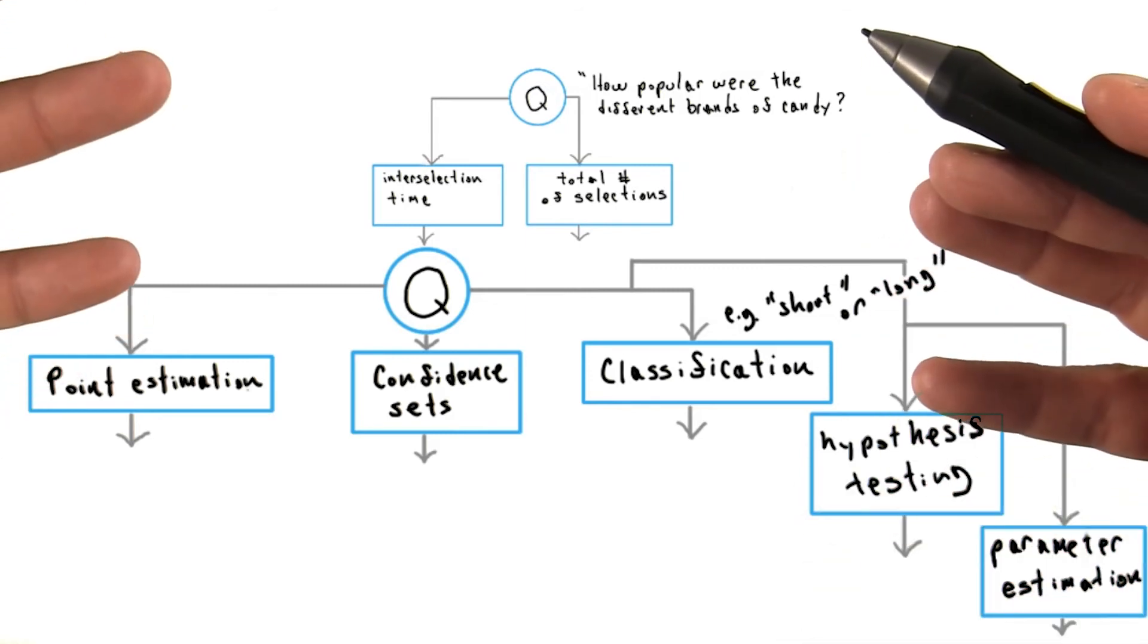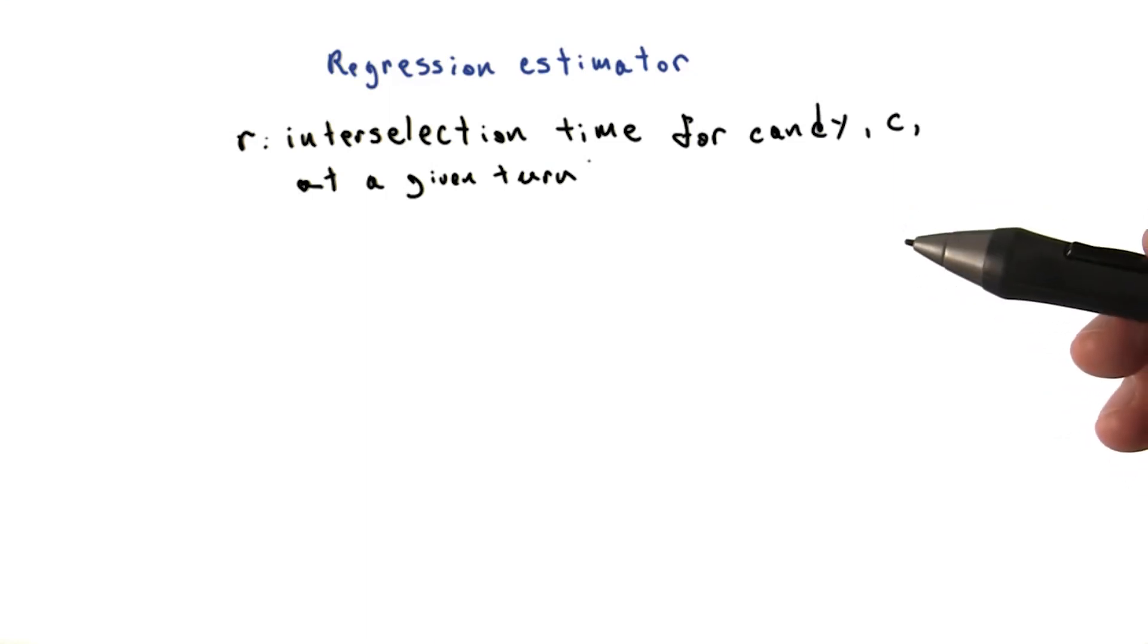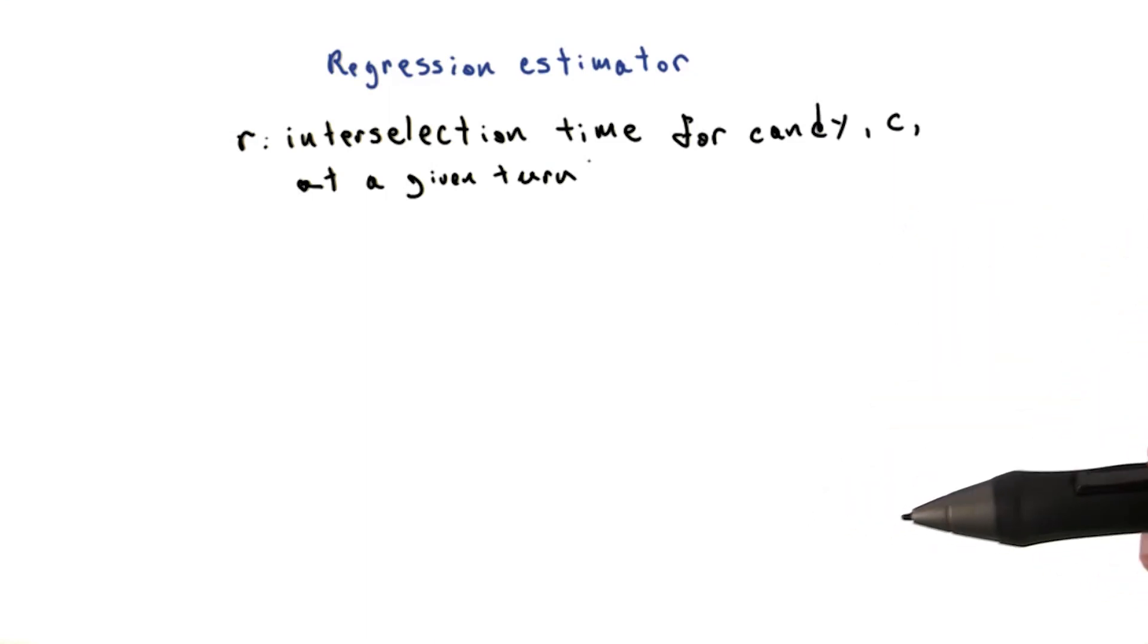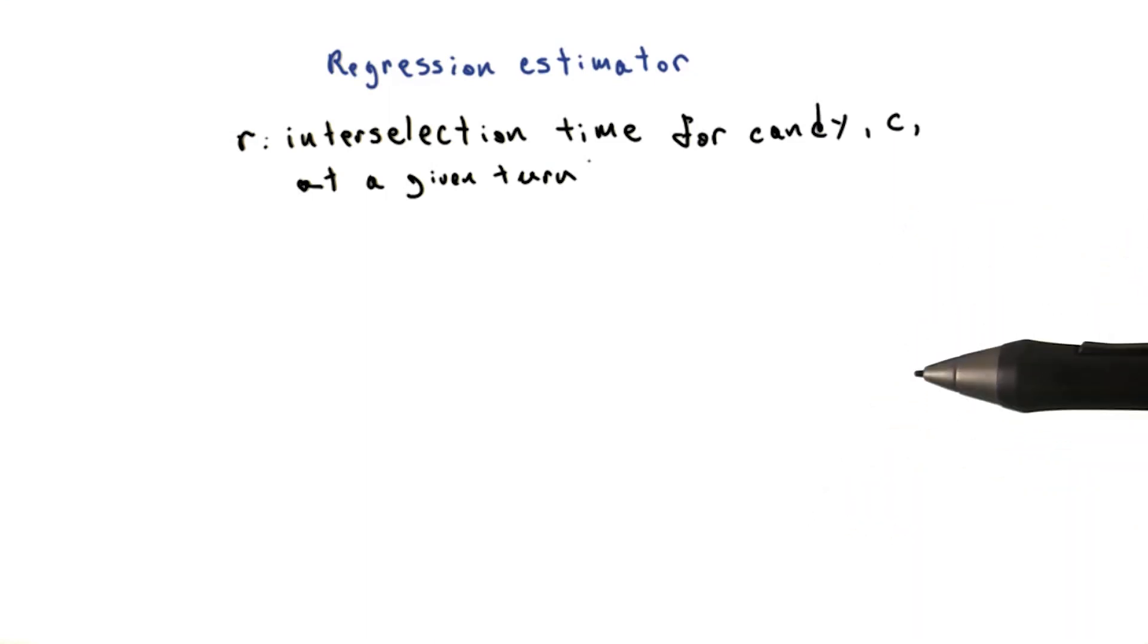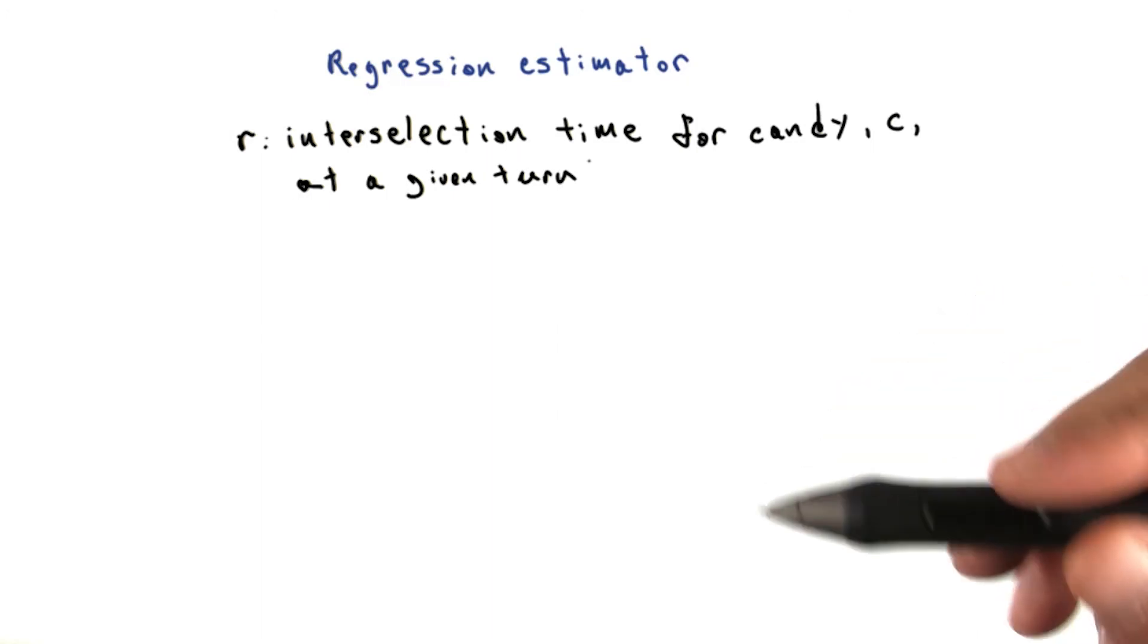Let's state this problem more formally. Our goal is to build a regression estimator, r. R will tell us its estimate for an interselection time for a candy C at any given turn.